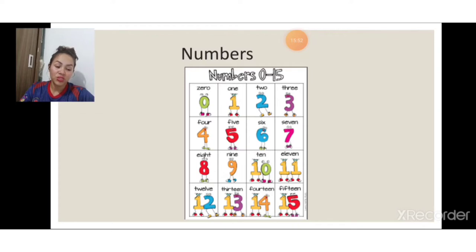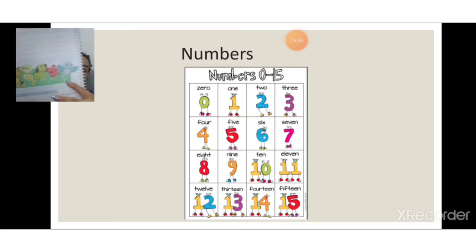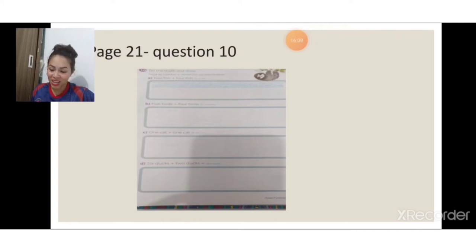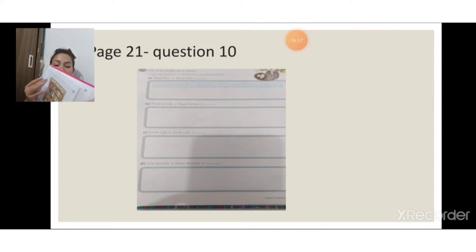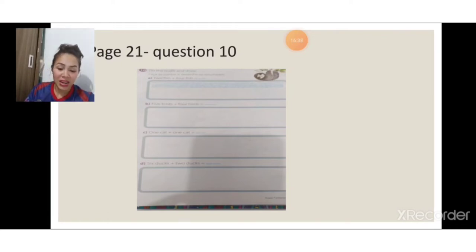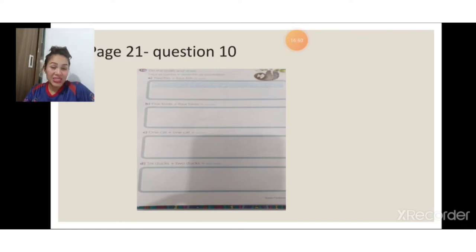Vamos dar continuidade agora na page 21. Páginas 18, 19 e 20 já foram feitas. E aí chega a page 21. A page 21 é uma atividade que nós vamos fazer hoje, que está na nossa agenda. É o seguinte: 'do the math and draw' — faça as contas e desenhe os resultados. Exemplo, letra A: two fish plus four fish — vai resultar quantos peixinhos eu vou ter que desenhar? Quanto é dois mais quatro?